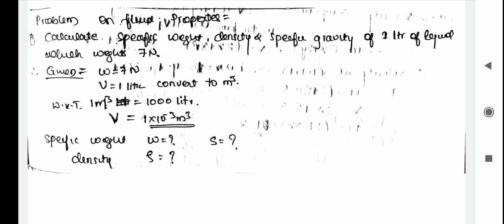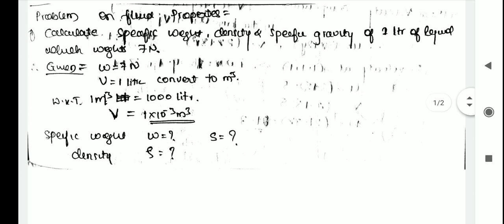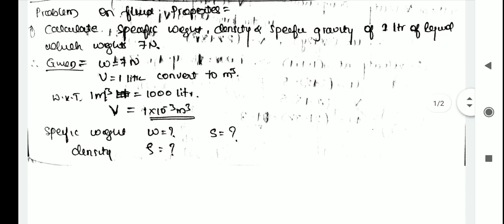Next, specific weight — or weight density — is the weight of the fluid divided by the volume of the fluid, denoted by W, which equals rho times g. Specific gravity is denoted by S. For a liquid, it is the density of the liquid to the density of water. For gases, it is the density of the gas to the density of air.